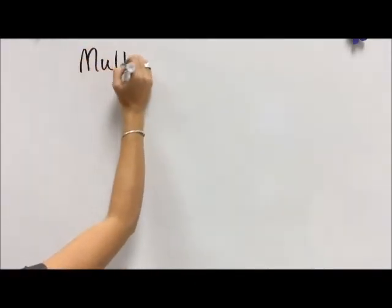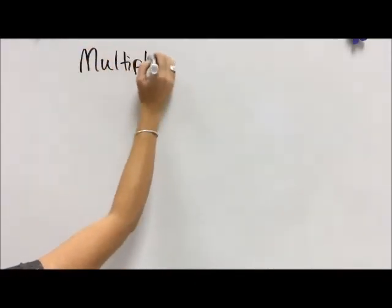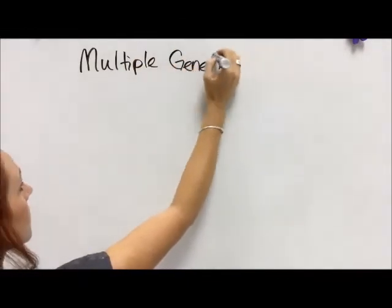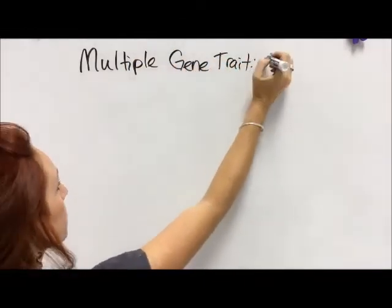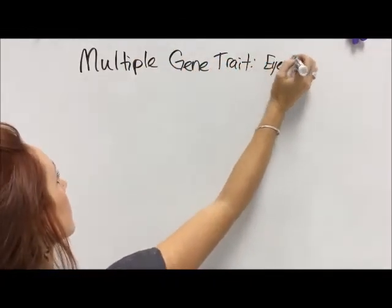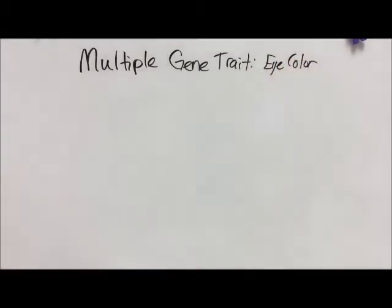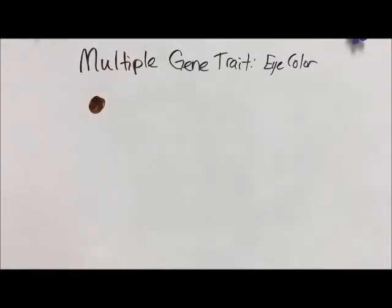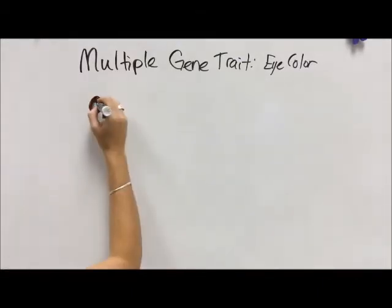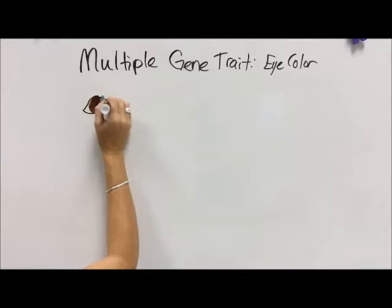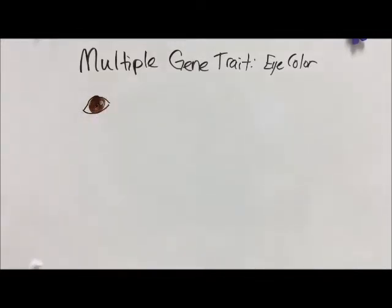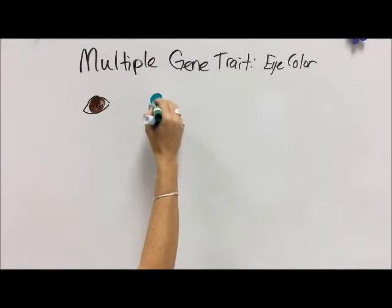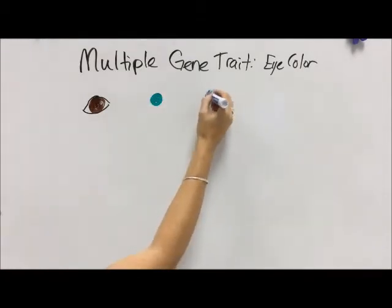Now that we have talked about single gene traits, like the idea of having freckles and not freckles, I think that we can look at some more complex things, like eye color. The thing with eye color is that in science we understand two genes very clearly, and those two genes help to code for three different colors: brown, green, and blue.